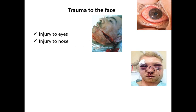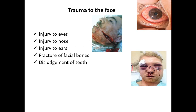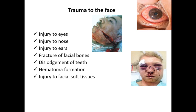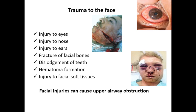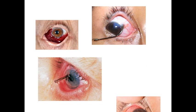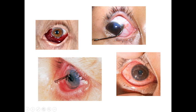Trauma to the face can cause injury to the eyes, nose, ears, facial bones, dislodgement of teeth, hematoma formation, and injuries to soft tissues. The key concern with facial injuries is airway obstruction — since the nose is located in the face, injuries can obstruct the airway, making it difficult for the patient to breathe. This is life-threatening.